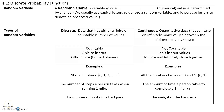In section 4.1 we will talk about discrete probability functions. Let's look at some definitions. A random variable is a variable whose quantitative or numerical value is determined by chance.